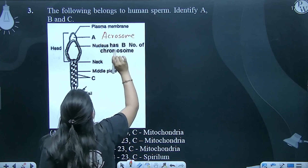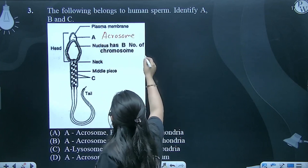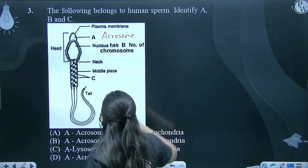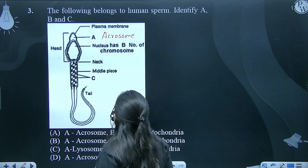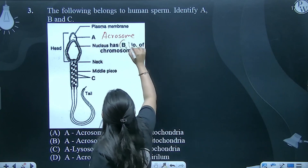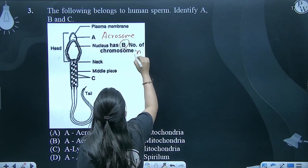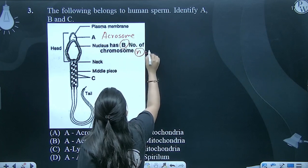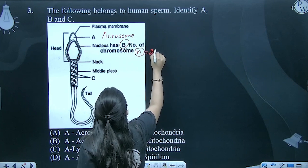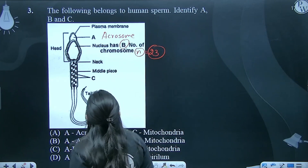Uske baad mein B poochha hai. Nucleus has B number of chromosomes. We know very well that it has haploid set — that means 23 number of chromosomes.